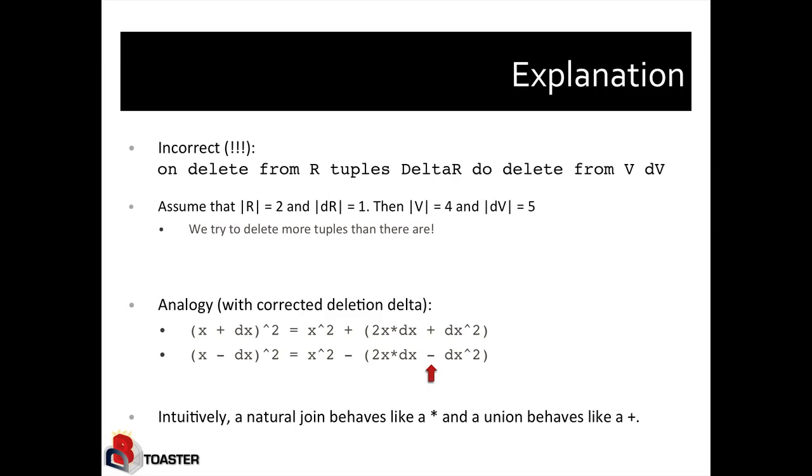Now, if we actually say (x - dx), we actually subtract dx from x and square that, then we cannot just take the delta that we had above, which was 2x dx plus dx squared and subtract that. If you apply basic algebraic laws, we would actually have to subtract 2x dx minus dx squared rather than plus dx squared. So that's the difference.